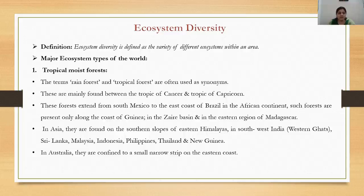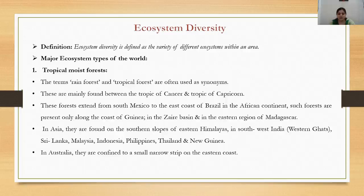The first major ecosystem type is the tropical moist forest, also referred to as rainforest or tropical forest. These forests are mainly found between the Tropic of Cancer and Tropic of Capricorn, extending from south Mexico to the east coast of Brazil. In the African continent, such forests are present along the coast of Guinea, in the Zaire basin, and in the eastern region of Madagascar. In the Asian continent they are found on the southern slopes of the eastern Himalayas, in southwest India (the Western Ghats), Sri Lanka, Malaysia, Indonesia, Philippines, Thailand, and New Guinea. In Australia they are confined to a narrow strip on the eastern coast.